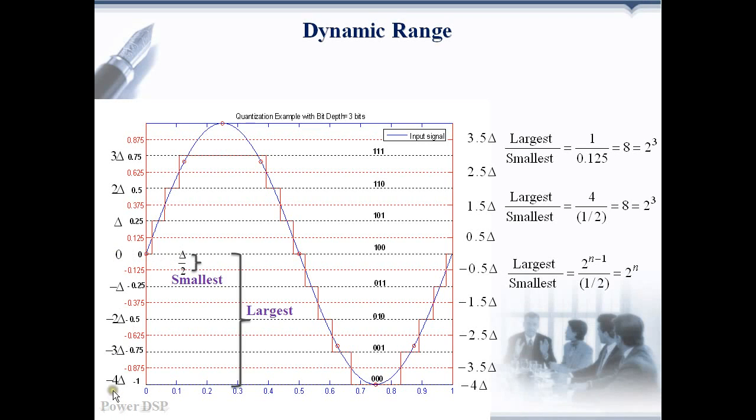0.125 is the smallest detectable voltage by the ADC, below which it is rounded to 0. The largest and smallest magnitudes are also given in terms of step size. The largest magnitude is 4 here and the minimum magnitude is 1 by 2. We can generalize this. The largest amplitude is 2 power n minus 1 and the smallest amplitude is 1 by 2.